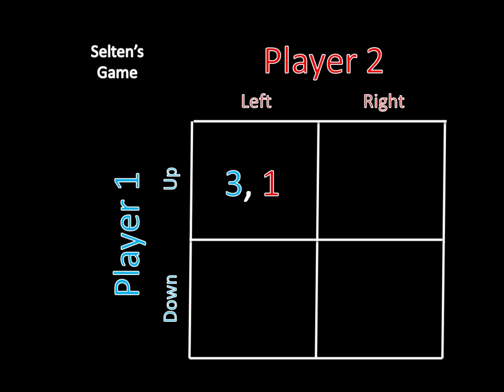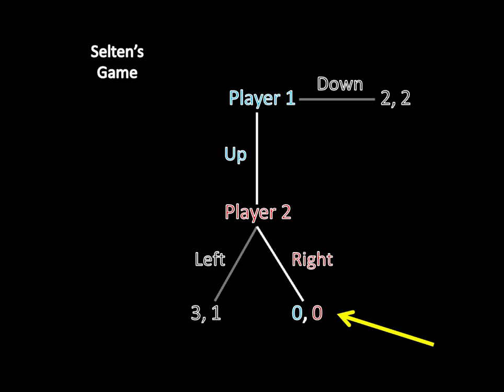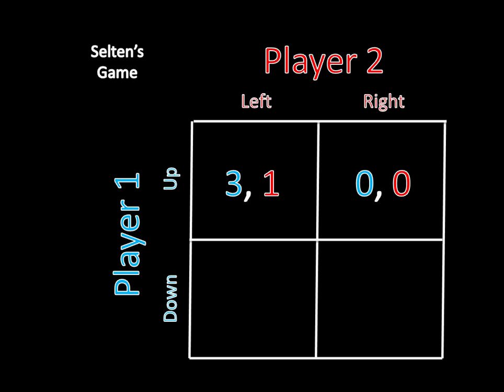Now let's move to up right. And here this is going to be the very same process except player two is moving right. So one goes up, two goes right, and you end up with the 0-0 outcome. And we plug it into here just like that.